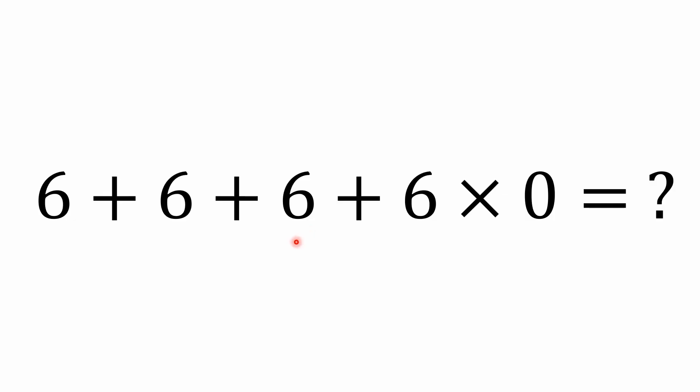Hey, hello everybody and welcome back to the math puzzle crash course. We've got a simple problem here — at least I think it's simple. It's a mixed operations problem. This is one that I've seen pop up online recently; these things seem to keep getting recycled. The problem is: six plus six plus six plus six times zero equals what?